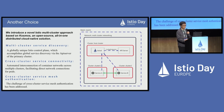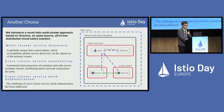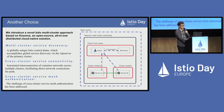To tackle the challenges mentioned, we introduce a novel Istio multi-cluster approach that differs from the community solution. This approach is based on Cosmos, an open-source, all-in-one distributed cloud-native solution. This strategy resolves the three key requirements previously outlined. Firstly, a global unit Istiod control plane accomplishes global service discovery via the API server of the primary cluster. Secondly, automated interconnection of container networks across multiple clusters facilitates direct network connections for pods. Thirdly, the challenge of cross-cluster service mesh authentication has been addressed.